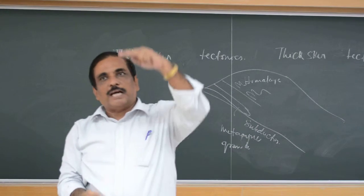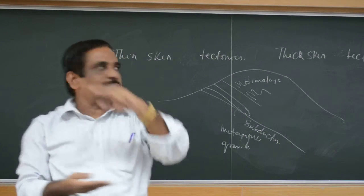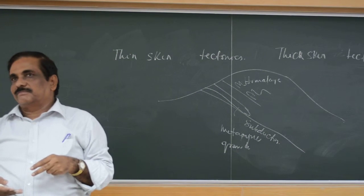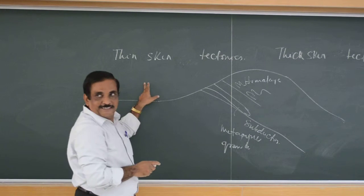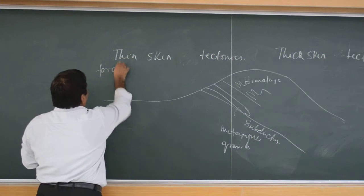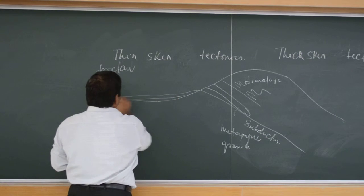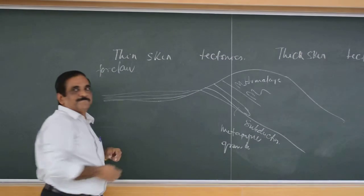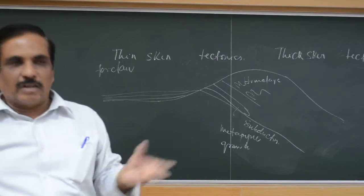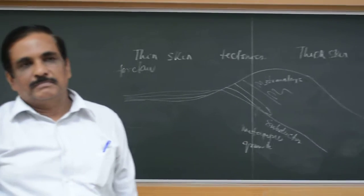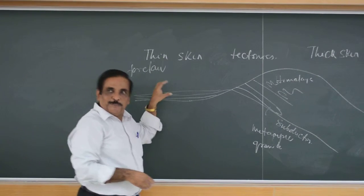This is called thick skin tectonics. This happens over a large thickness of the crust — up to 20 to 30 km of crust is deformed. But when you come to the foothills, which is the foreland, these sediments are being derived and deposited here. The maximum thickness will be 2 to 3 km — these are the Siwalik or Hindu Kush alluvial foreland deposits.